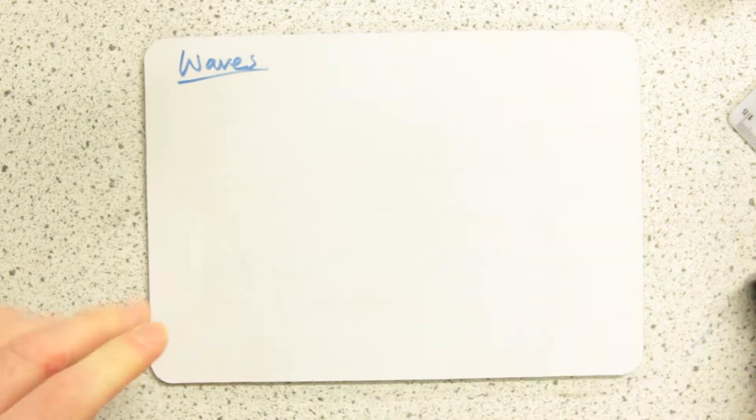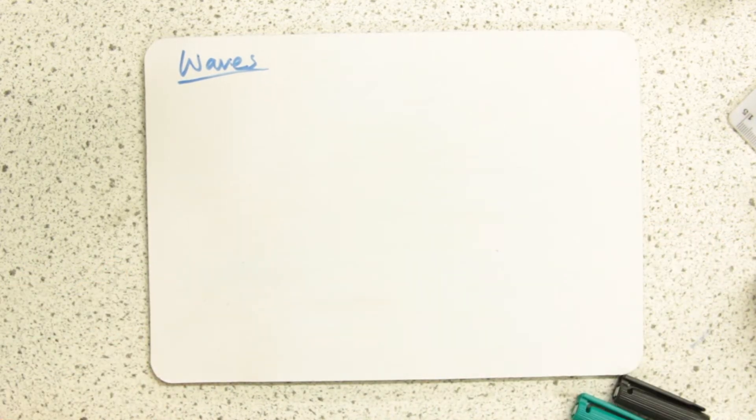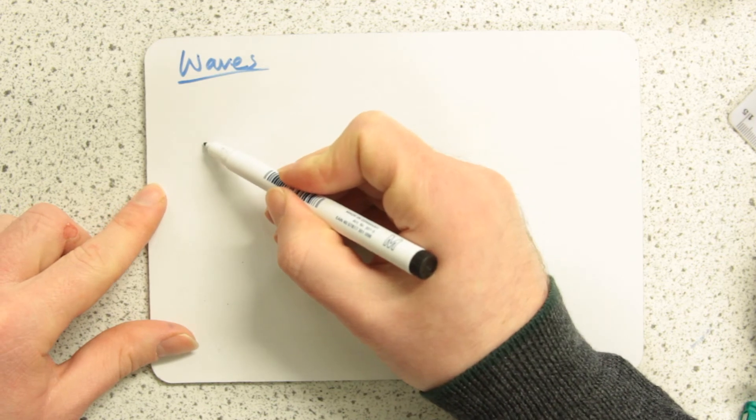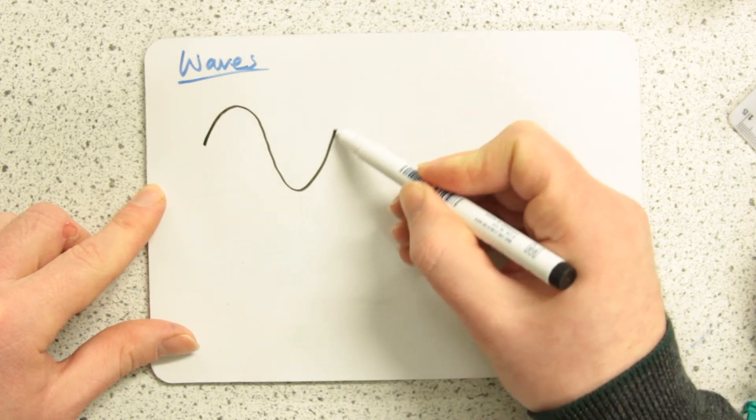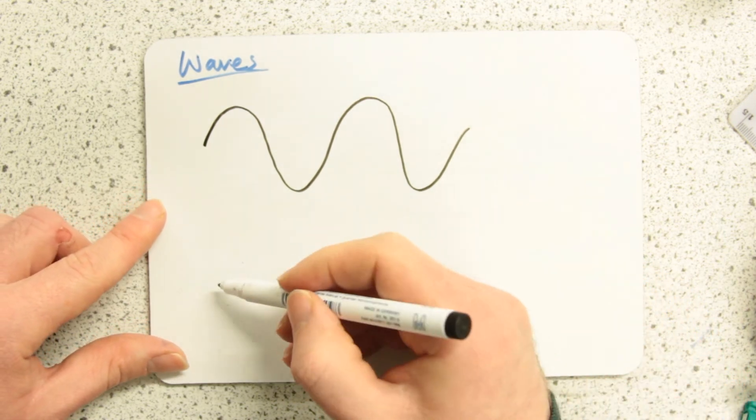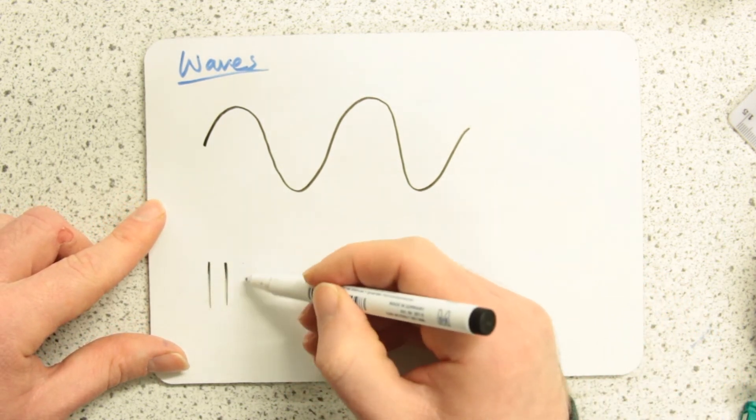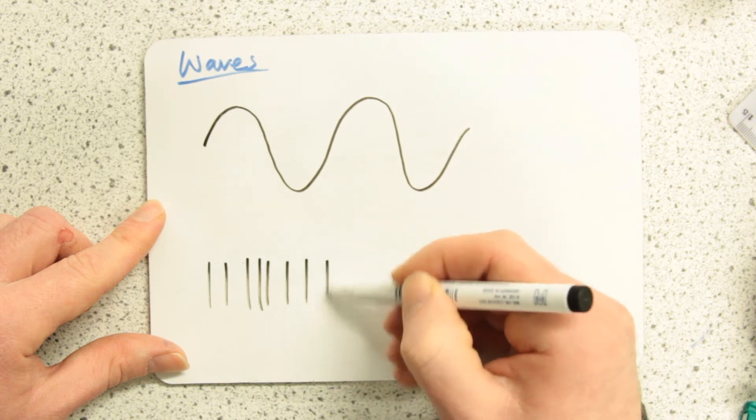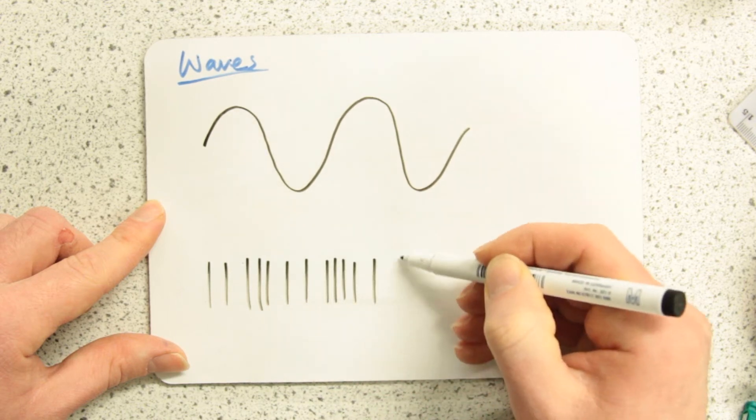Well, you need to recognize there are two different types of waves. The one I've just drawn is a transverse wave. It's not an up and down wave so don't get that wrong. And this one is a pressure wave or a longitudinal wave.